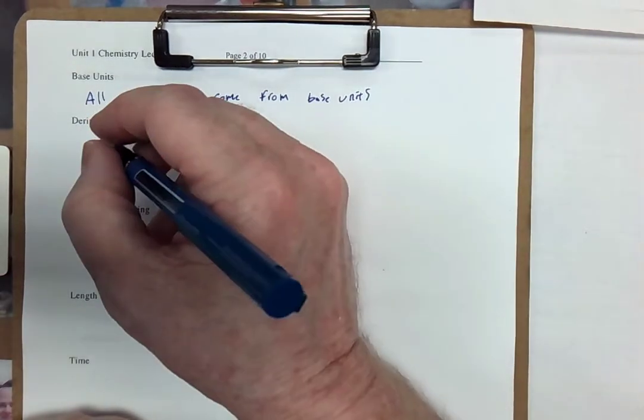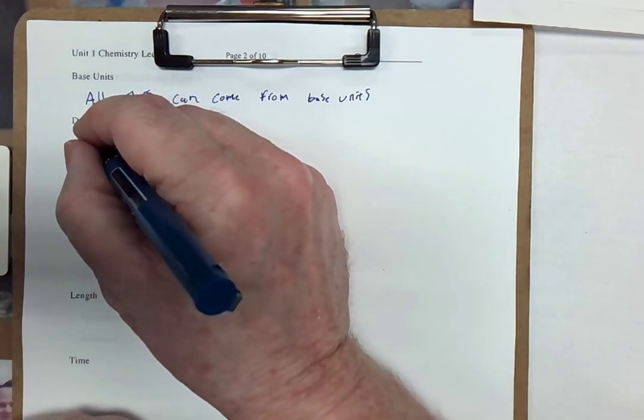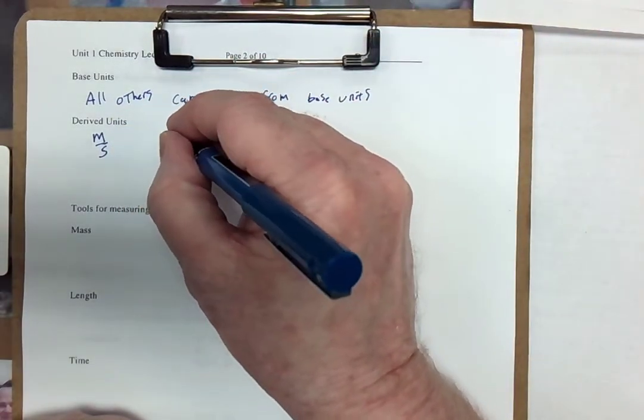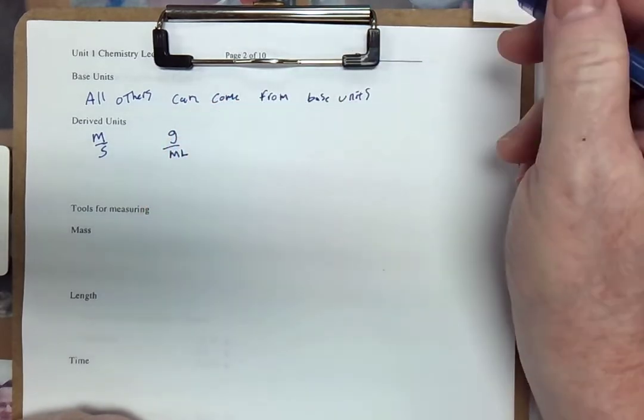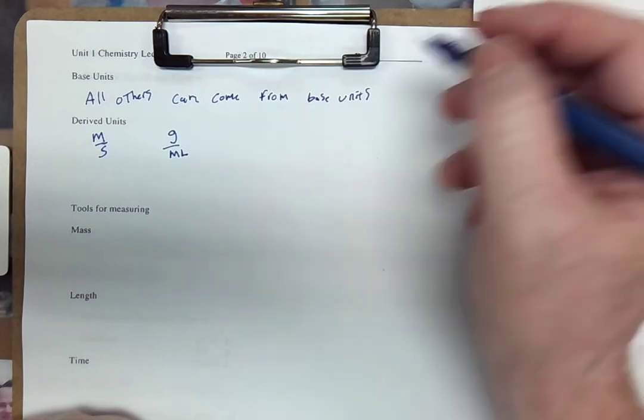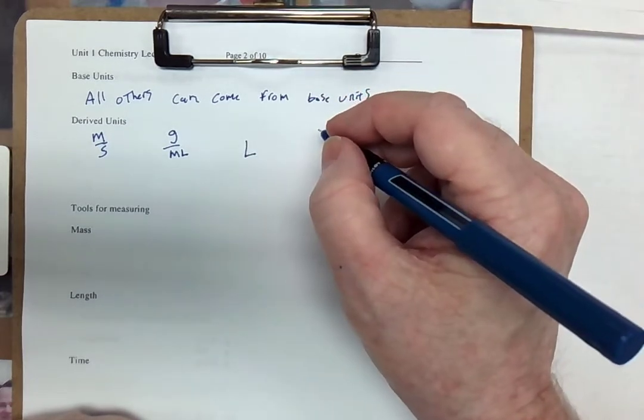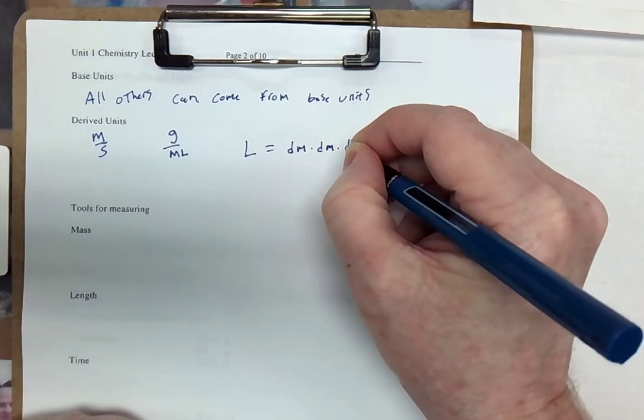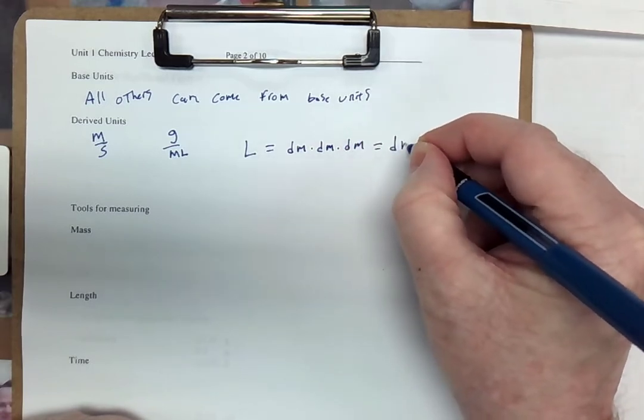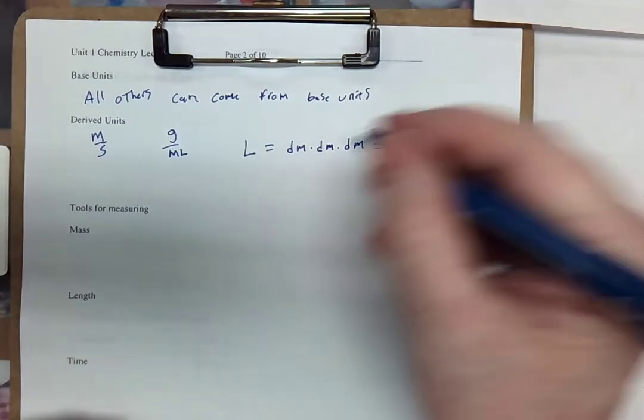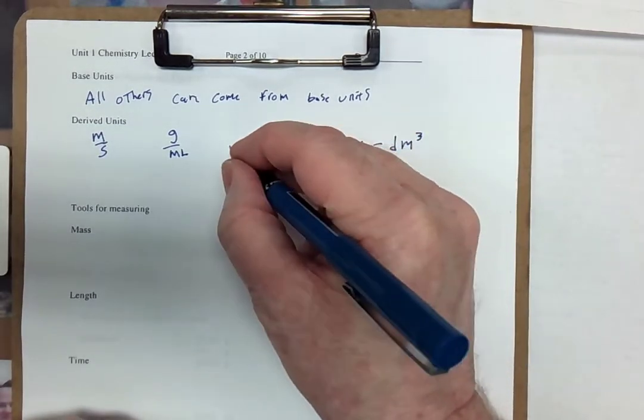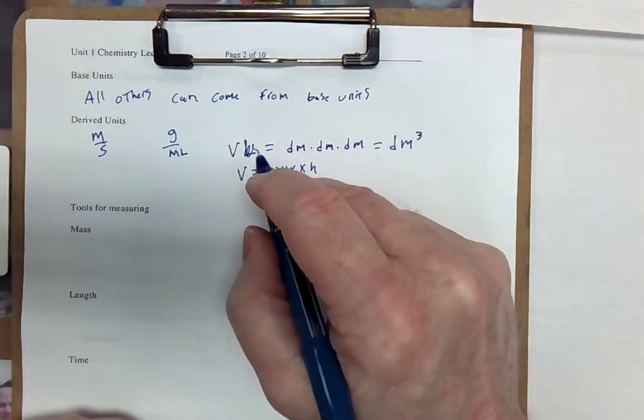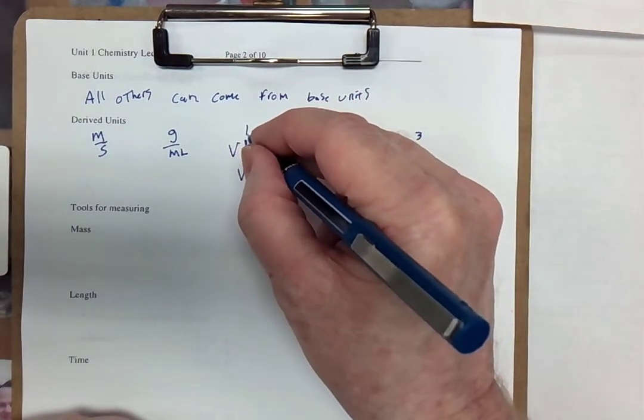So as an example, we have something like meters per second, where we take meters traveled divided by the number of seconds it takes, or grams per milliliter for density. Now the liter is a good example. A liter is actually equal to a decimeter times a decimeter times a decimeter, which is what we call a decimeter cubed. Because V is equal to length times width times height. L for liter, V for volume.